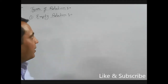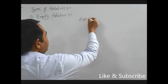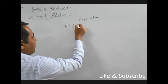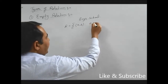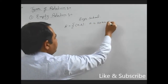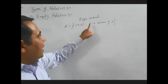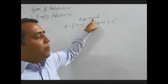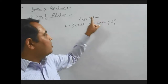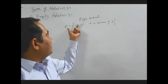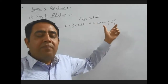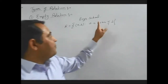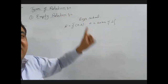We can understand it by example. Let there be a boys school, and in this boys school a relation is defined as R = {(A, B) such that A is sister of B}. We can clearly see that if A is sister of B, it means A is a girl. But there is no girl in a boys school. So no element of set A is related to another element of set A. This type of relation is known as empty relation.